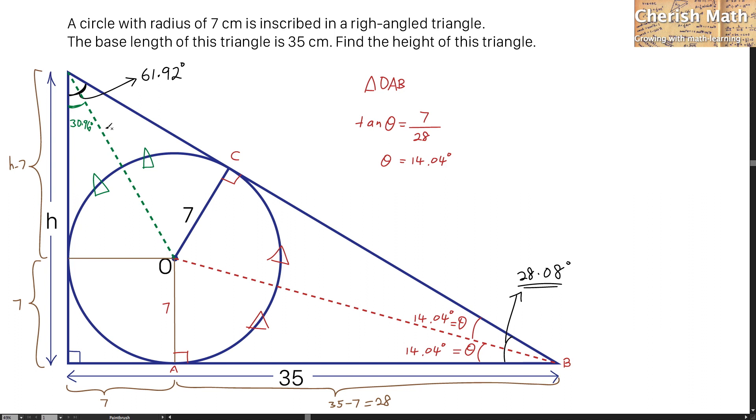I'm now going to use the triangle located on the top left for the calculation of the value of H. And I'm going to use trigonometry again. So tan 30.96 degrees equals 7 divided by H minus 7.